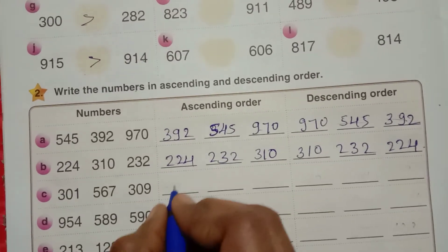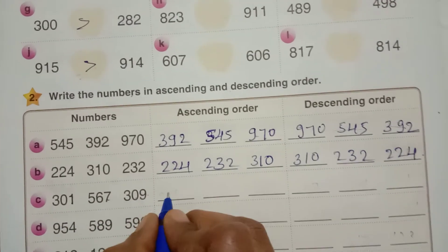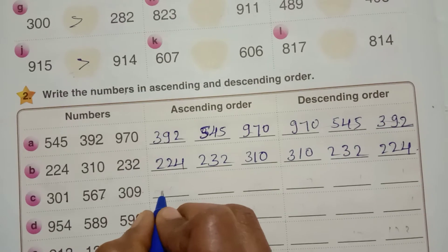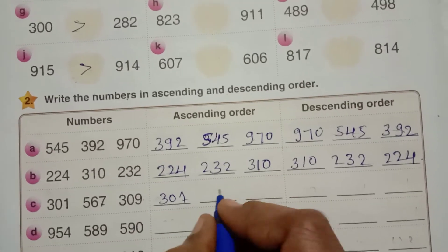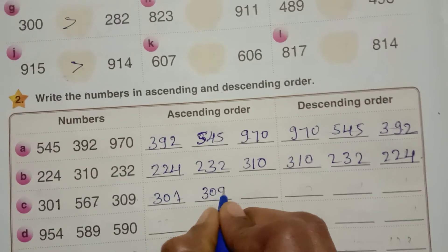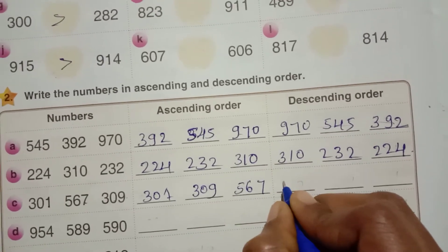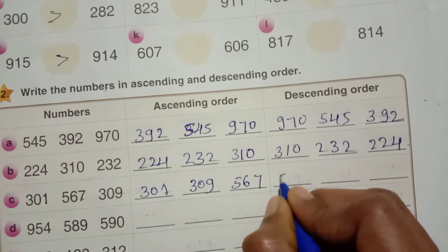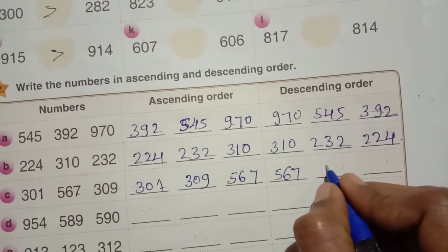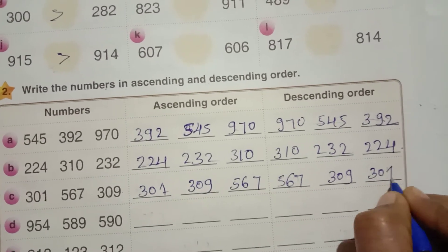Next, 301 is they given, 567, 309. First you write small number. Next 309. Next 567. Descending order means first you write greatest number, 567. Next 309. Next small number, 301.